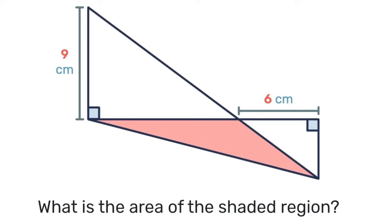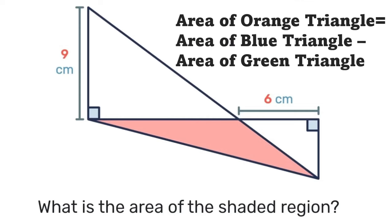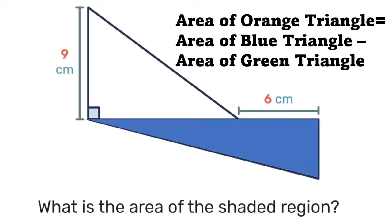To solve this, we will look at the general outline, which is that the area of the orange triangle is equal to the area of this blue triangle minus the area of that green triangle. We'll come back to that later.